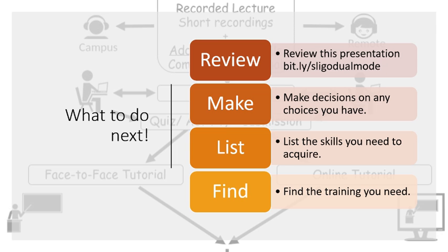While you do that, make decisions on any choices that you have. List the skills that you need to acquire — what is it that you need to learn in order to do the things that you want to do? Once you've listed those skills, you will need to go and find the training, because you may have different tools available in your organization than in other organizations.